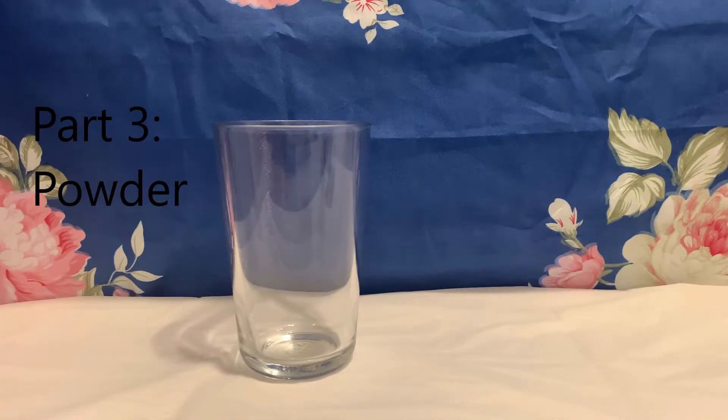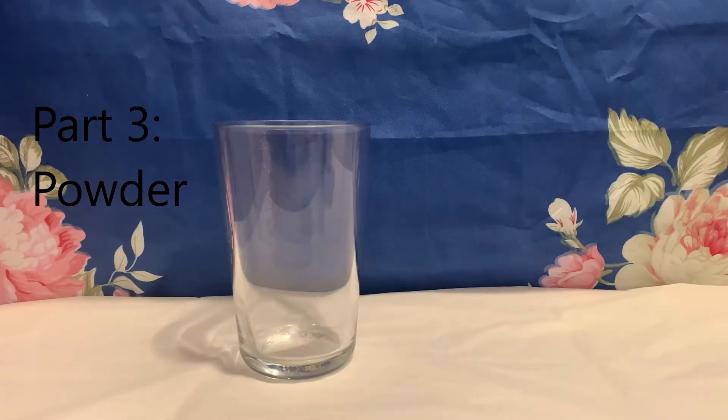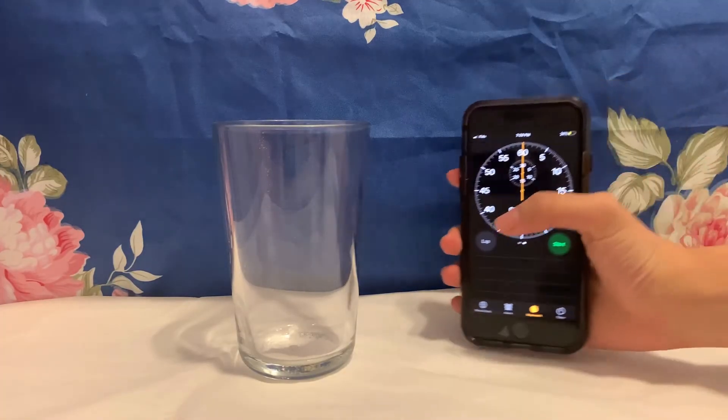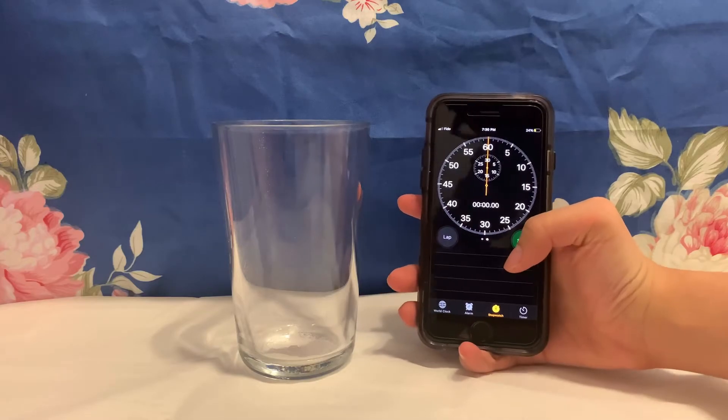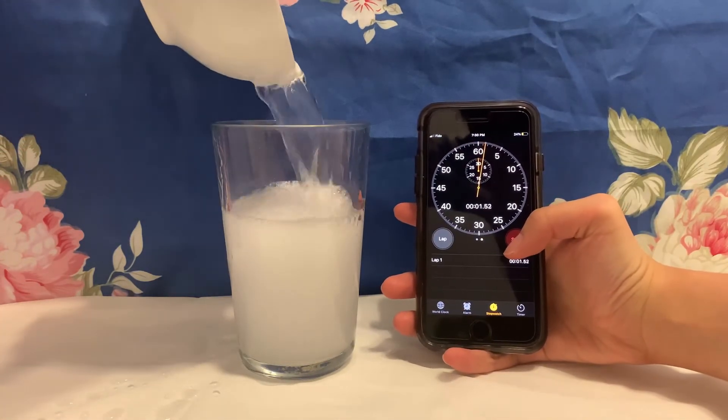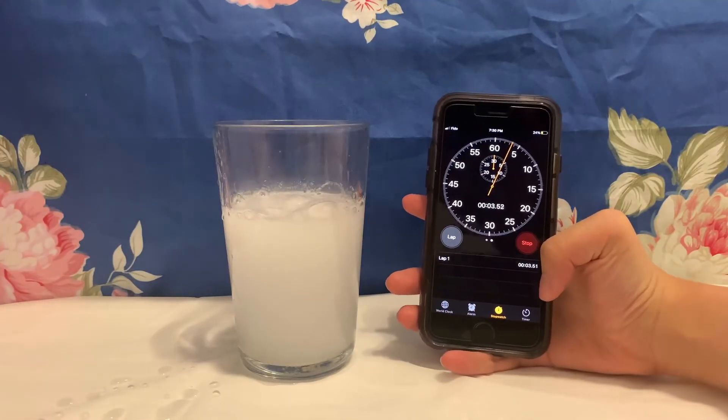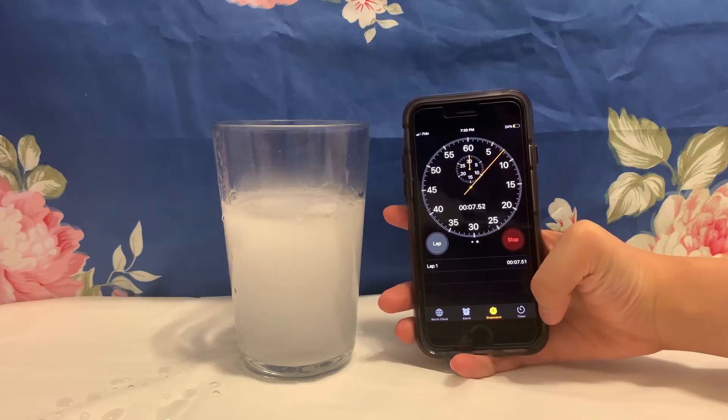Part three, grinding an Alka-Seltzer tablet into powder. In this step, take an empty glass and place your Alka-Seltzer powder inside. Once you are done, start your stopwatch as soon as you pour water inside your glass. Make sure to pay extra attention to the time it takes for the powder to dissolve. And stop your stopwatch as soon as you see no more bubbles forming and record your results in your table.